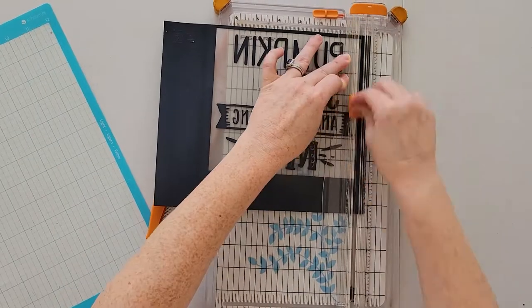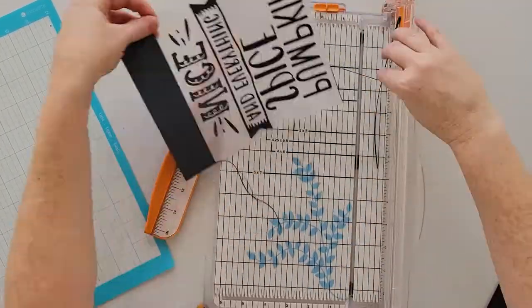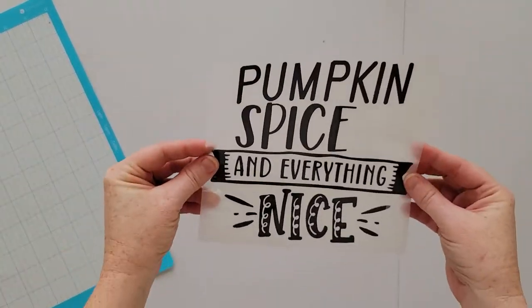Then take your cut and weeded HCV and trim away excess carrier sheet from around the design so that the design is centered inside the rectangle of the carrier sheet.